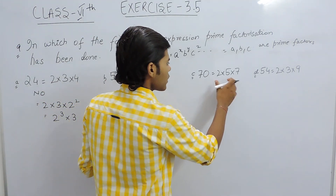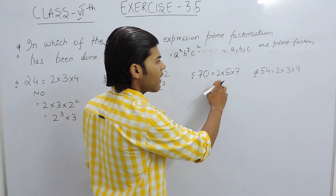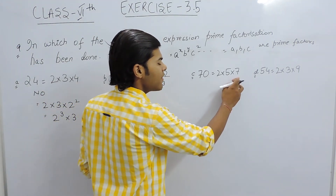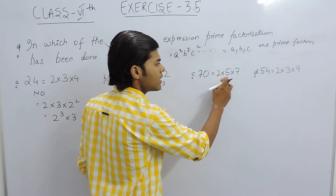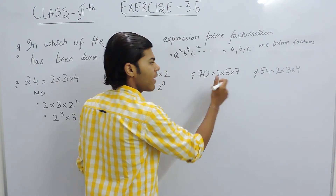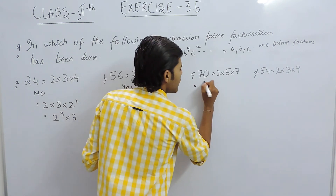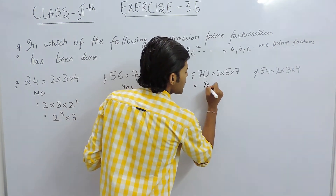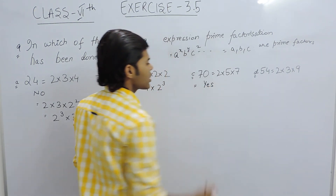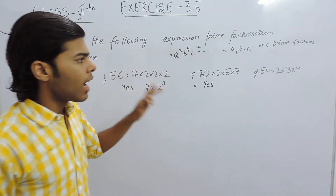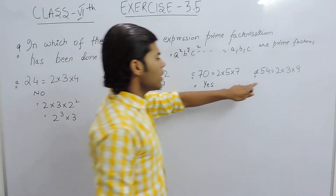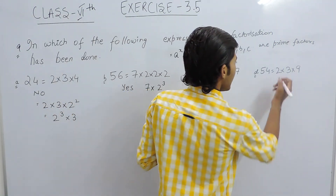Now in this one, 2 is a prime factor, 5 is a prime factor, 7 is a prime factor. So in this one also, the prime factorization has been done.